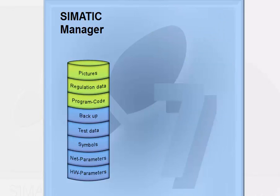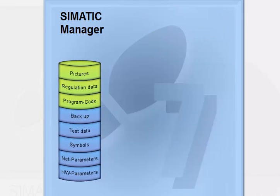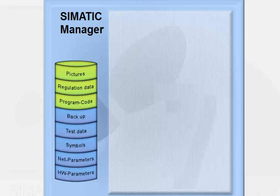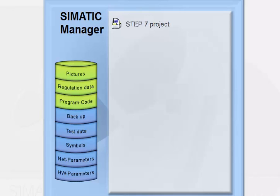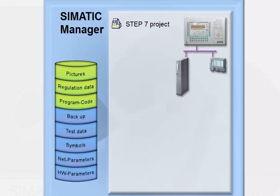We will now show you what the project data look like in the Simatic Manager, as seen by the user. The entire automation system is organized in a hierarchically structured project, whose function is the organized storage of all data and programs generated in the course of solving an automation task. All the objects handled by the Simatic Manager have an equivalent in the real objects of the plant.